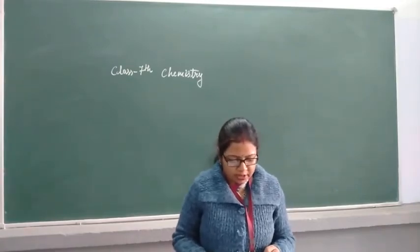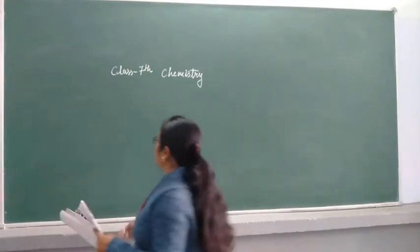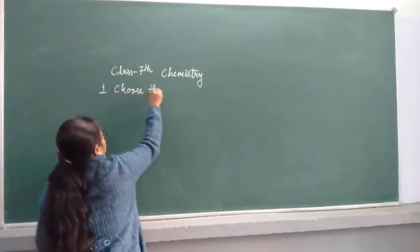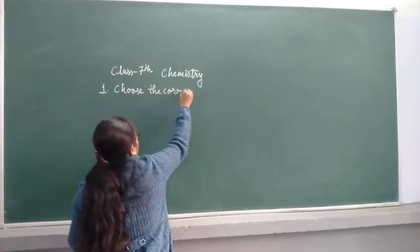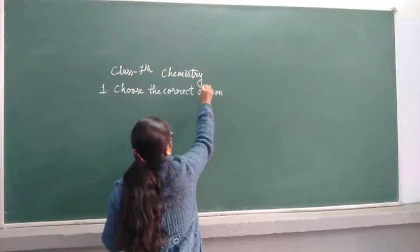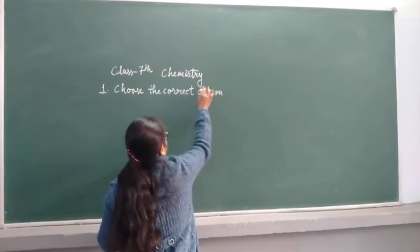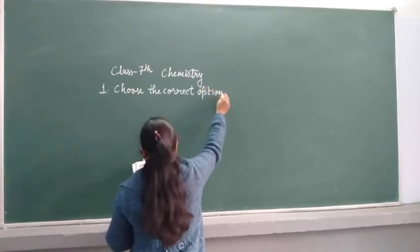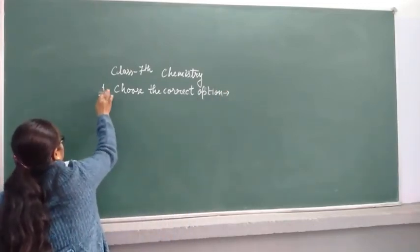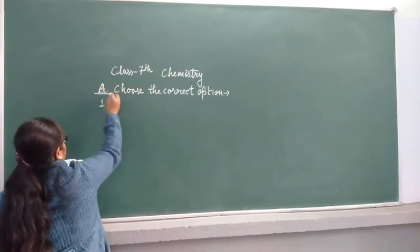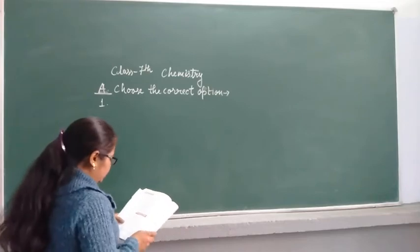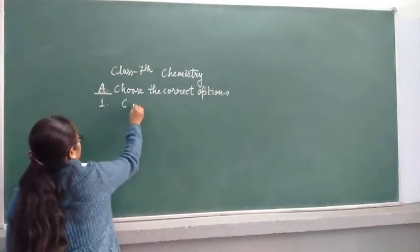So first one is choose the correct option. First question: The substances initially involved in a chemical reaction. The answer is C, reactant.